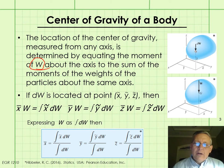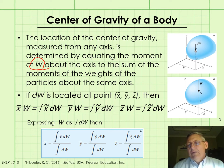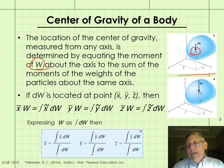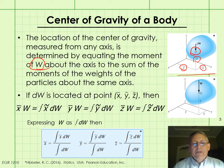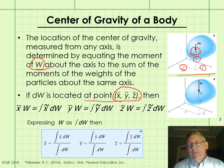In our figure, we have an X, Y, Z coordinate system with some generic body. Here is a particle with weight dW, and the X, Y, Z coordinates of that particle are shown as X̃, Ỹ, and Z̃. So that particle, which has a weight of dW, is located at point X̃, Ỹ, and Z̃.